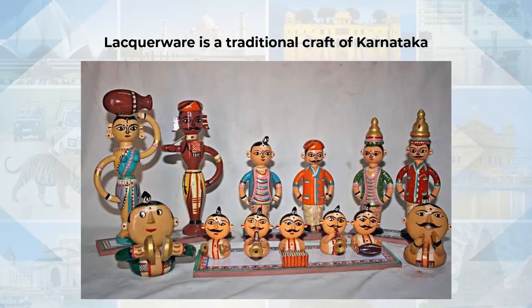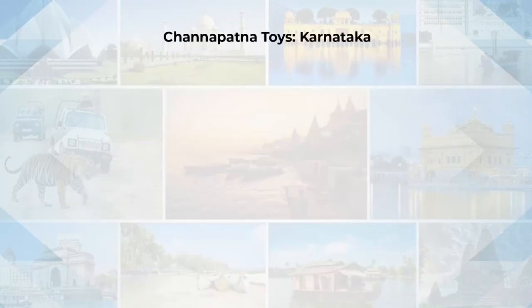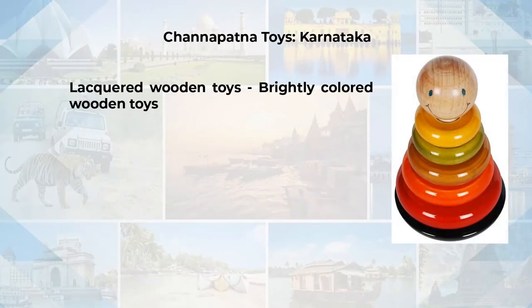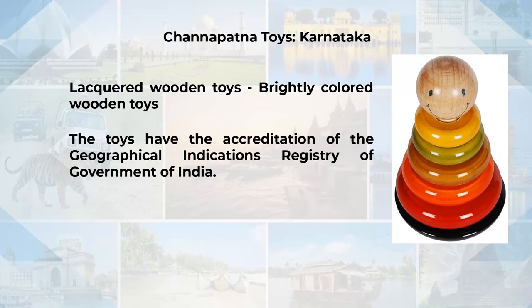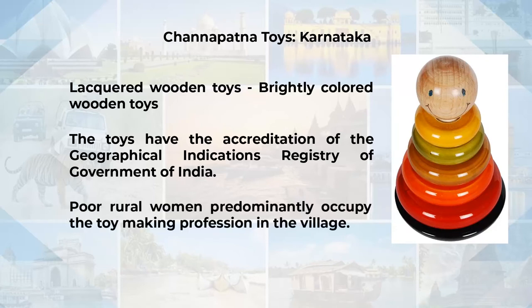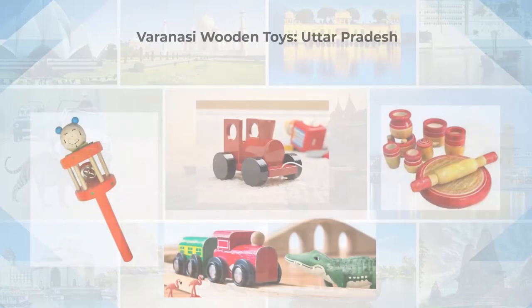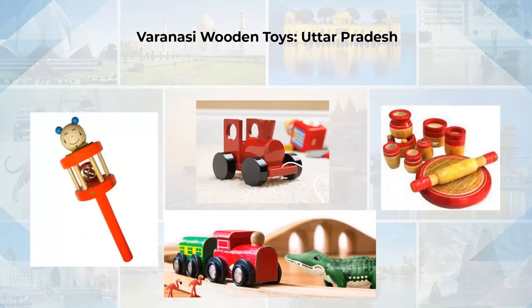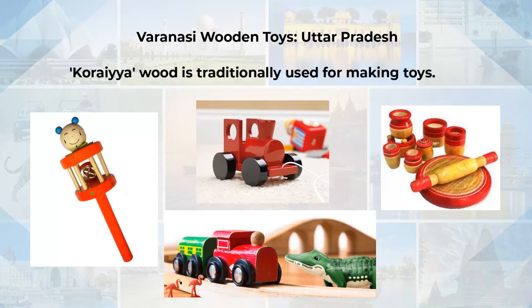Many states also make wooden toys. In Karnataka, Channapatna toys are very popular — lacquered wooden toys which are brightly coloured and popular among villagers and foreigners. These toys have the accreditation of the Geographical Indication registry of the Government of India. Rural women predominantly occupy the toy making profession in these villages. In Varanasi, wooden toys are also popular. Kurjaya wood is traditionally used, with toys taking the shape of humans, animals, birds, gods and goddesses, kitchen utensils, furniture, and musical instruments.